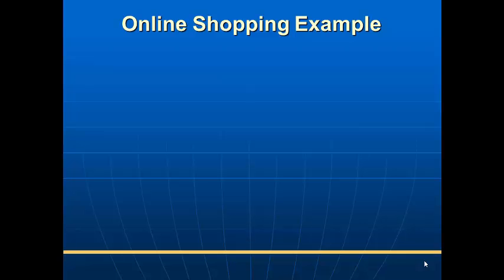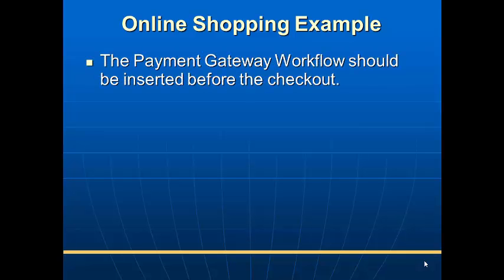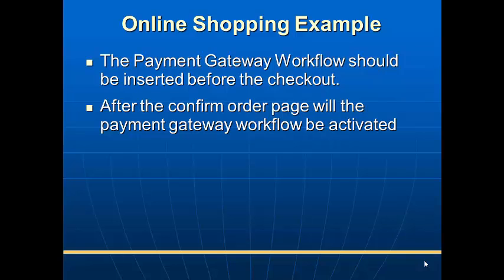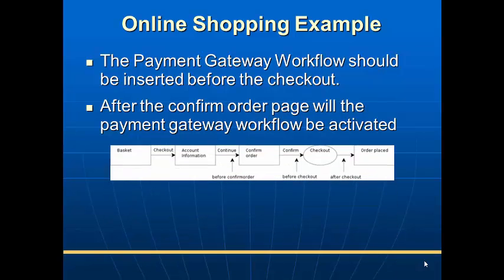For online shopping, the payment gateway workflow is inserted before checkout. After the confirm order page, the payment gateway workflow becomes active. First, add whatever you need to purchase to your cart. Second, proceed to checkout, where your account info, address, and other details will show. Then you confirm the order, after which payment options will appear — net banking, card, or offline payment. After successful payment, your order will be confirmed.